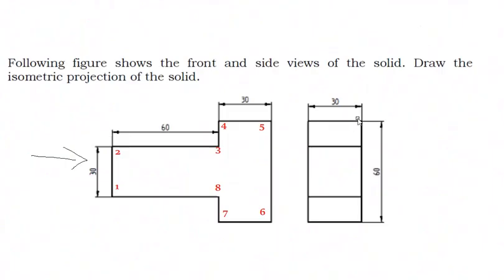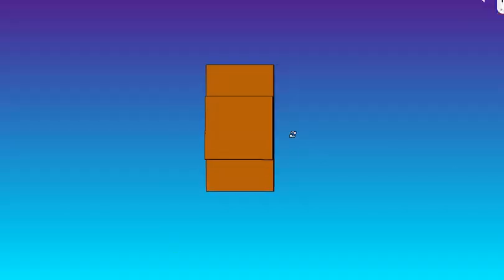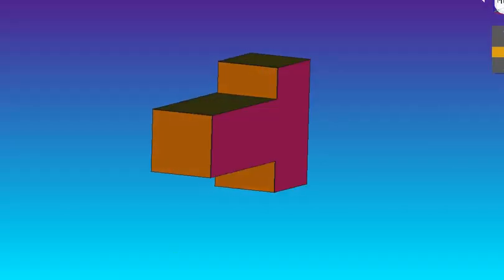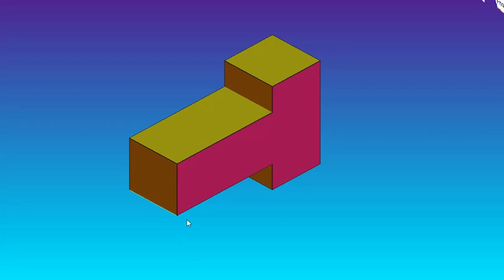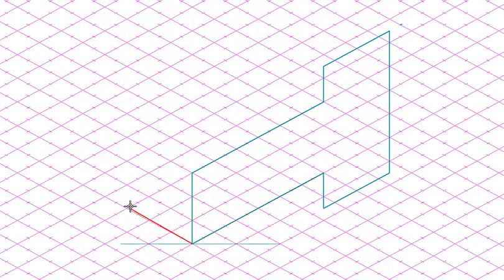Next we need to see the side view. The thickness of this T is 30mm. You can see it in the 3D model. I'll show the isometric projections — you can see that from here it is going to be 30 degrees again. This thickness is 30 throughout all, so we are going to represent the same thing. From this point, 3 boxes: 10, 20, 30.